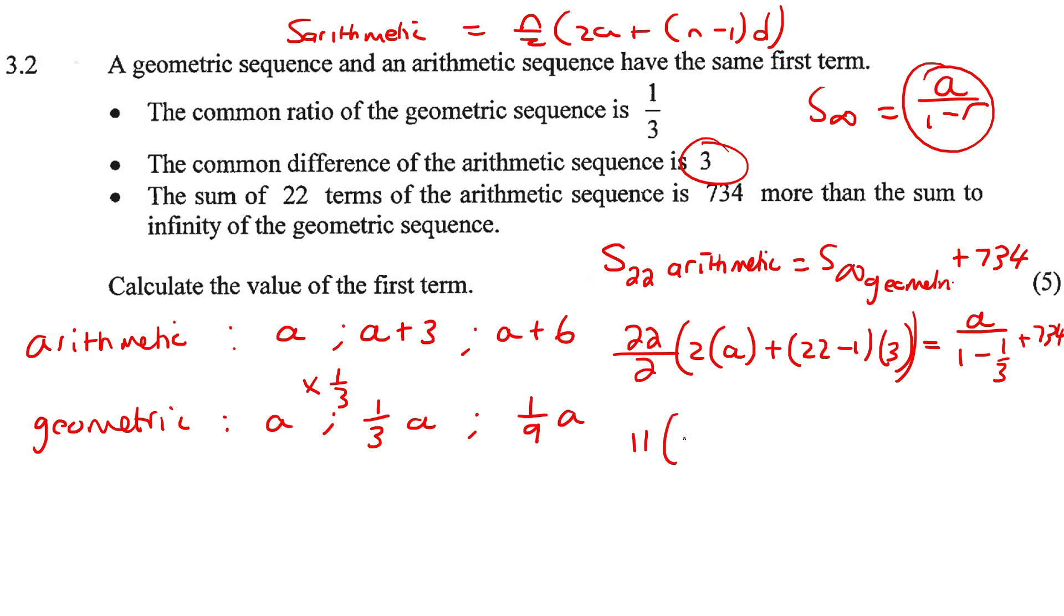So 22 over 2 is 11, and then 2a, and then this is just going to give us 63, I think. Yeah, 63. And then a over one minus a third. So that's a over two thirds, plus 734. Now I'm just going to multiply the 11 in. So we end up with 22a plus 63 times 11, which is 693, equals to...